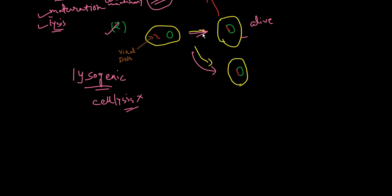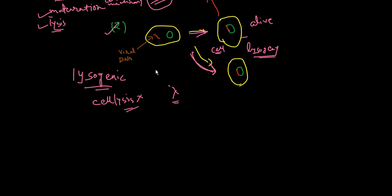Bacterial cells infected by these phages are called lysogenic cells. The most studied bacteriophage that uses the lysogenic cycle is bacteriophage lambda, which infects the bacterium E. coli.